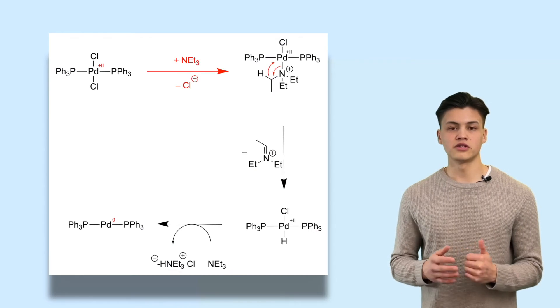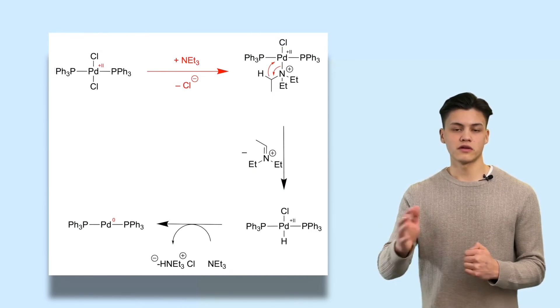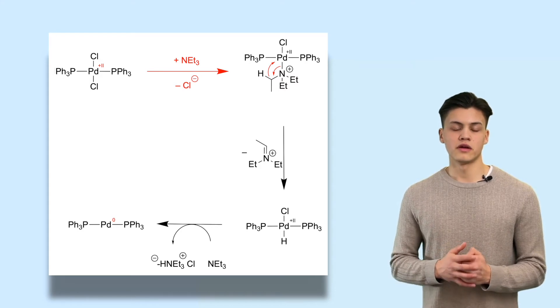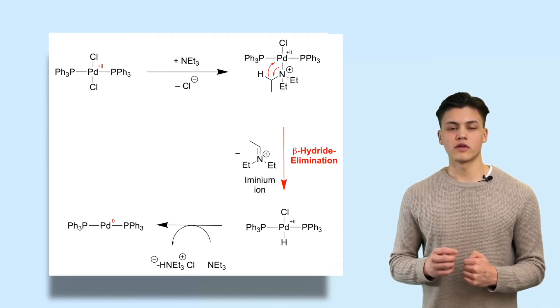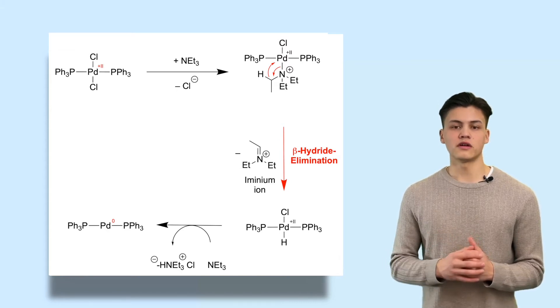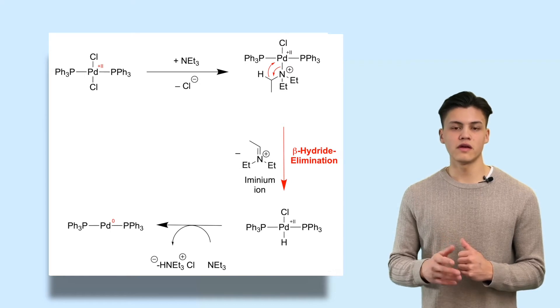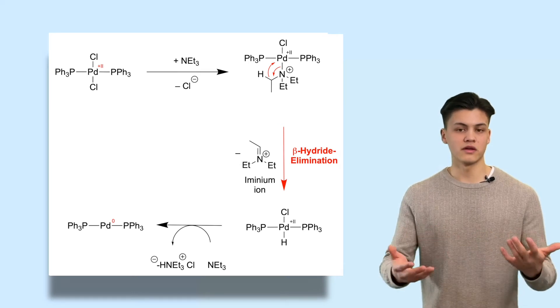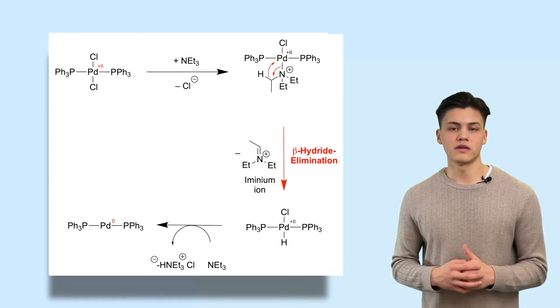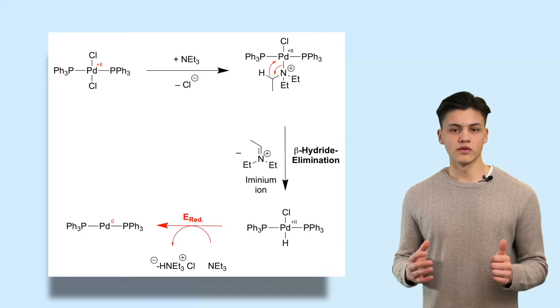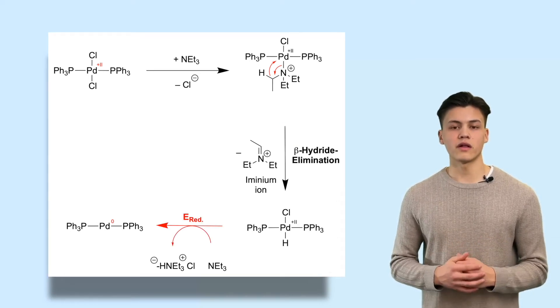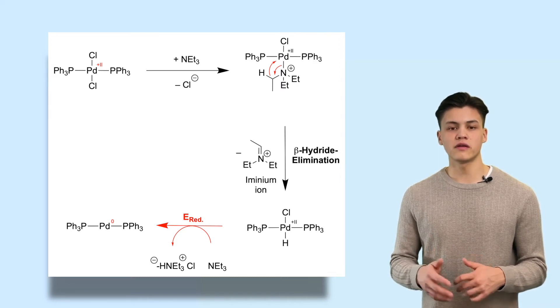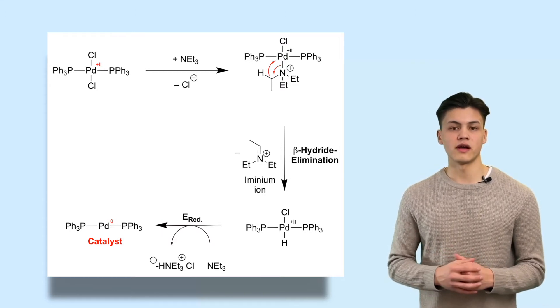The first step is a simple ligand exchange reaction: one chloride ligand dissociates and the triethylamine binds to palladium through its lone pair. The next step is a beta-hydride elimination — the carbon in beta position to palladium has a hydrogen bonded to it, which migrates as a hydride to perform an elimination, forming a double bond and an imine in this case. The hydride ligand then binds to palladium. The next step is a reductive elimination from which hydrogen chloride eliminates, reducing palladium back to oxidation state zero, giving us our active catalyst.